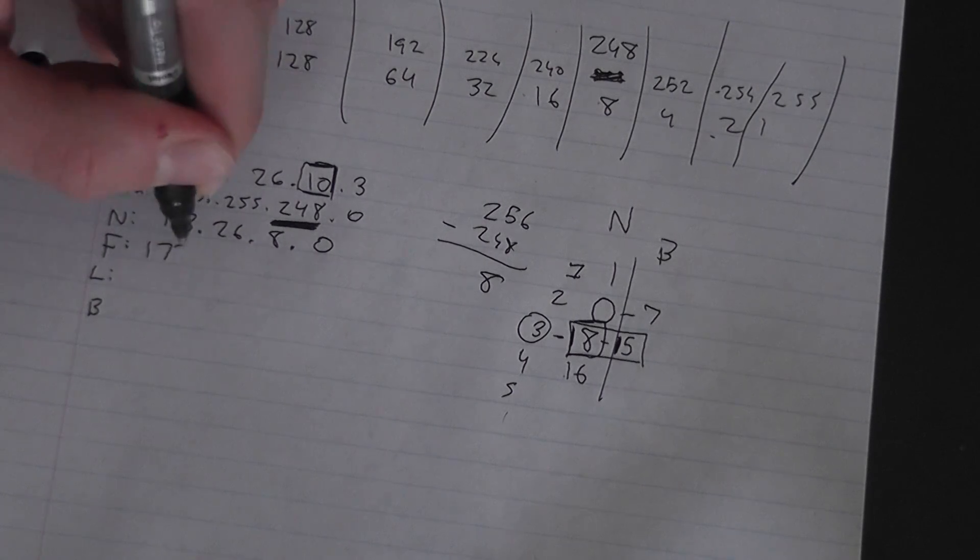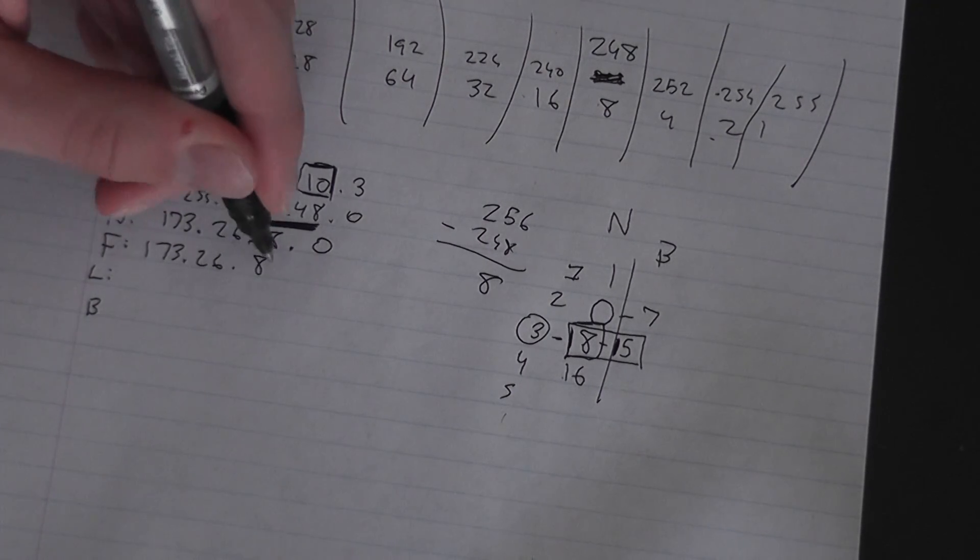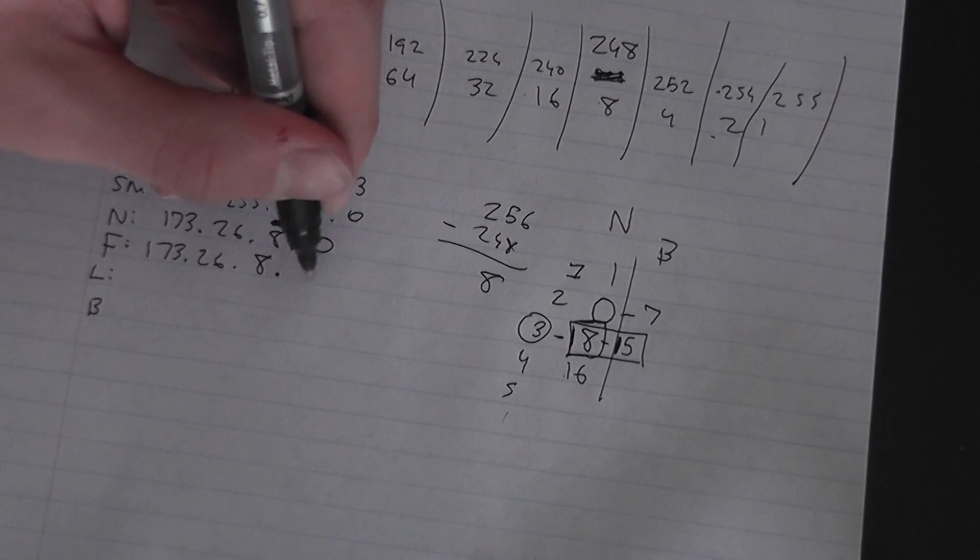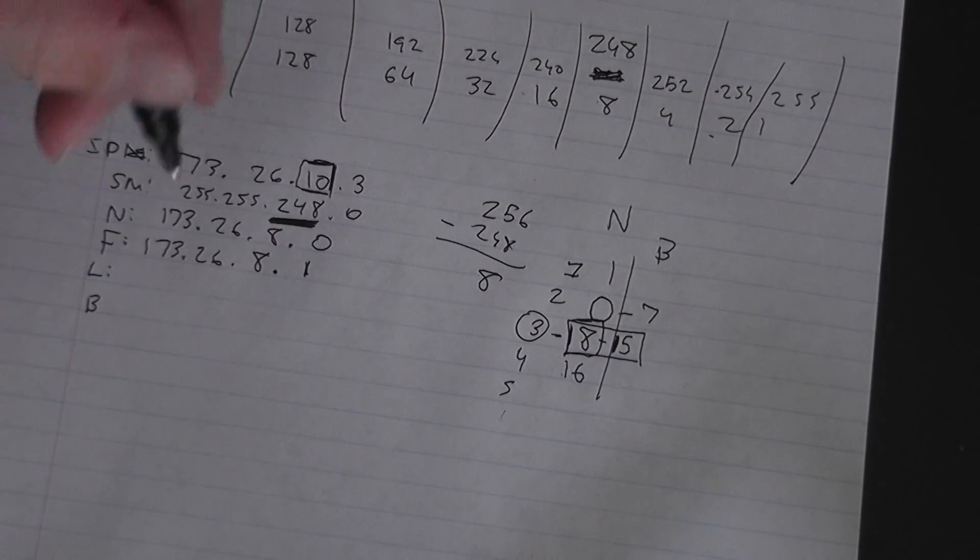First usable is 173.26.8 - can't be 0 because that's network - so it's 173.26.8.1. It's so simple.